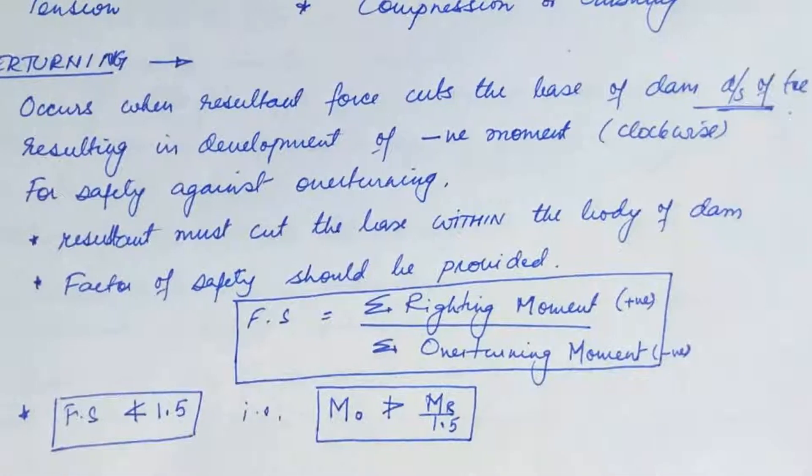And this factor of safety should not exceed the value of 1.5. That means MO, that means overturning moment should not be more than, putting the values here of Fs, what we get, MO should not be more than MR upon 1.5. MR being the writing moment.